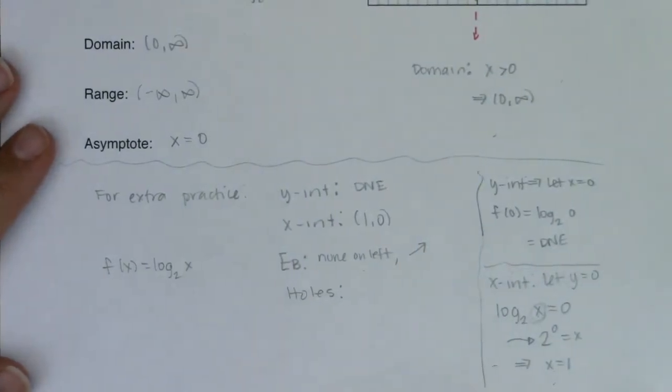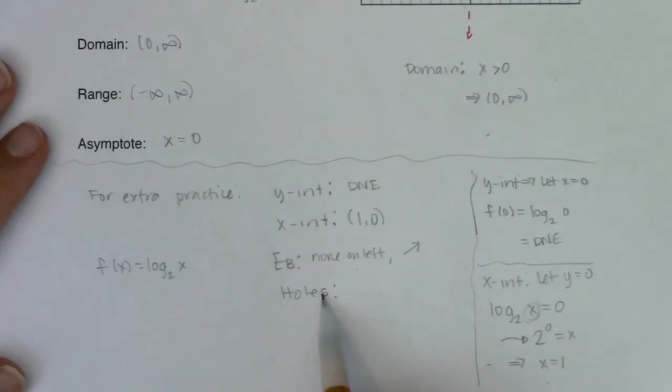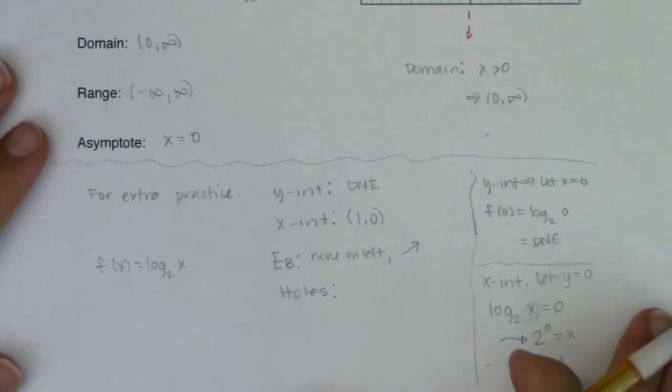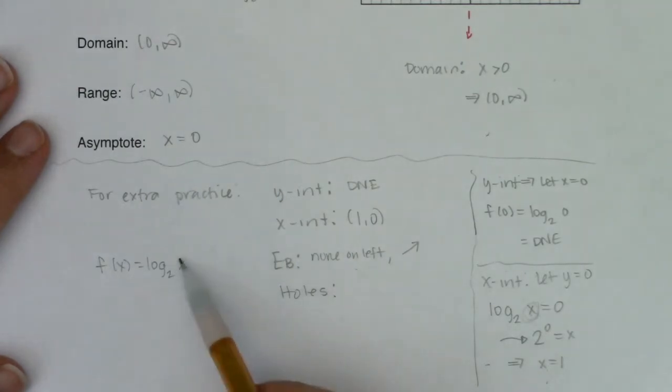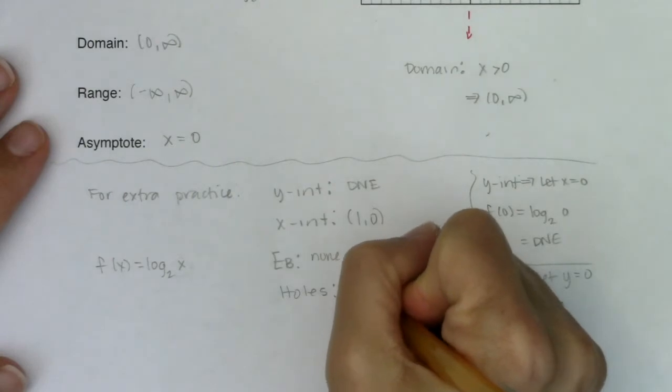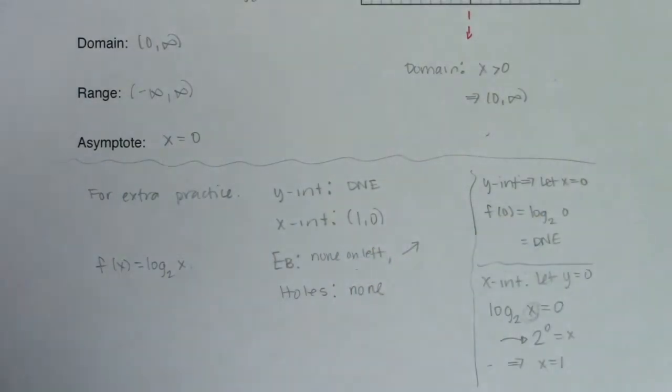Now, if we think back to when we were talking about holes, that's when we had rational functions and we had a factor common to the numerator and denominator. If you look at my argument, there's no fractions in it. So I don't have any holes.